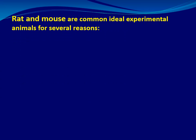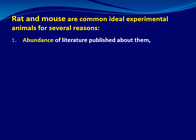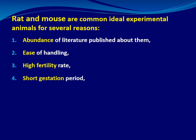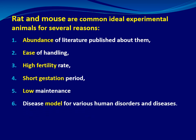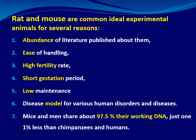Why we use rats and mice in experimental research: number one, abundance of literature published about them; ease of handling; high fertility; short gestational period; low maintenance; and they serve as disease models for various human disorders. Also, mice and men share about 97.5% of their working DNA — just one percent less than chimpanzees and humans.